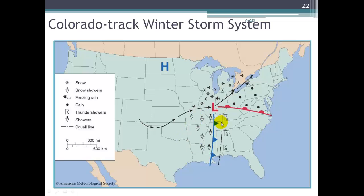On a weather map, when you see this dashed line here, this represents the squall line. So that line of thunderstorms right before that cold front.